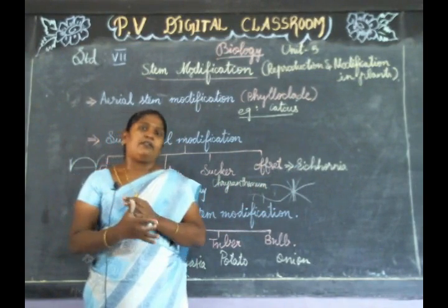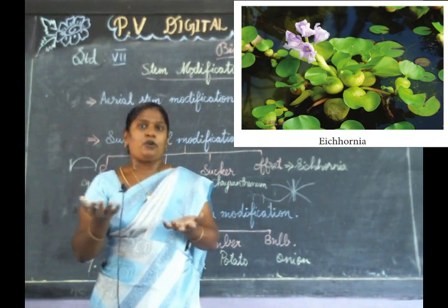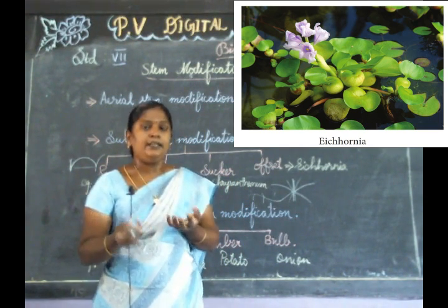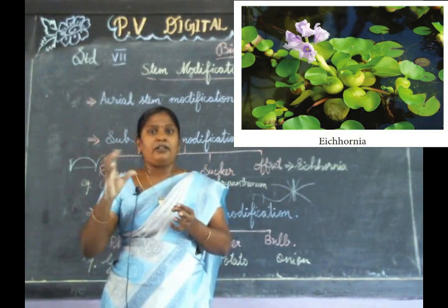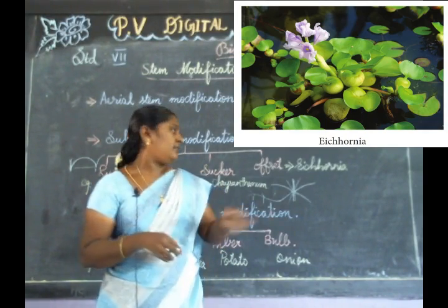The last one is the offset. For example, the Eichhornia plant — most water-polluting plants found in lake areas and pond areas. There is a lot of Eichhornia plant and the water body is fully covered. The stem region is very short and thick and completely filled with air, which helps it float over the water body. The leaves are also filled with air, which also helps for floating over the water body. That is the offset.